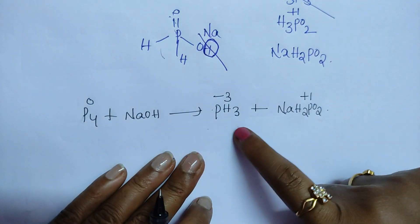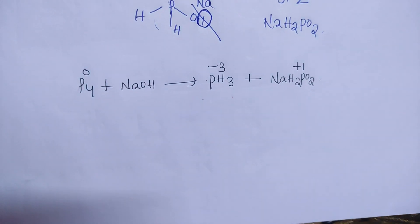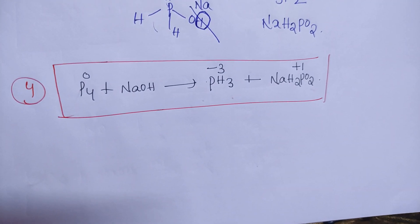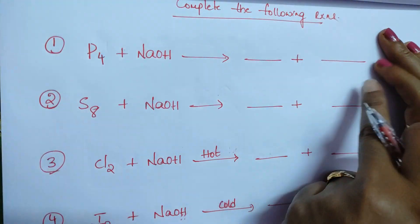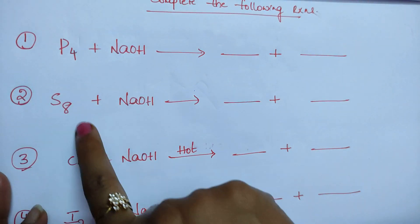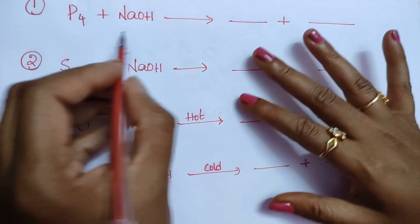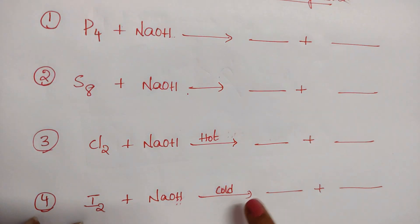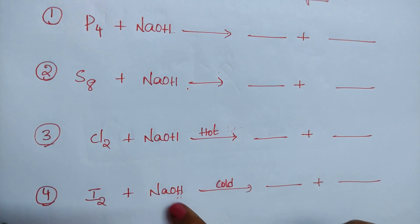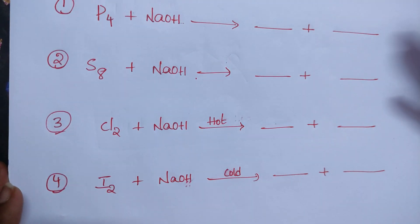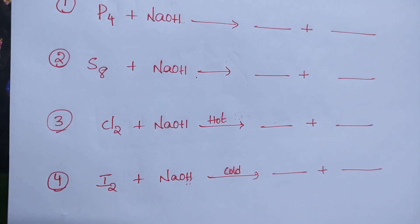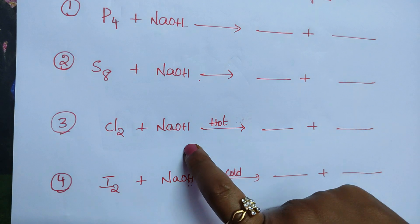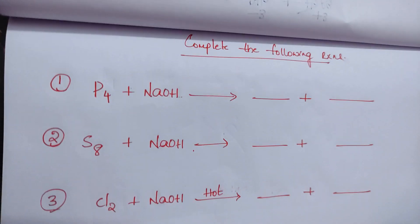This is reaction number four. Now for test-yourself questions: write the products for P4 + NaOH, S8 + NaOH, Cl2/Br2/I2 + NaOH (hot and cold). Note: sulfur and phosphorus always react in hot conditions, while Cl2/Br2/I2 react under both conditions. Fluorine is an exception — it can only show −1 oxidation state and cannot show a positive oxidation state, so it does not undergo disproportionation. The halogen disproportionation reactions apply only to Cl2, Br2, and I2.